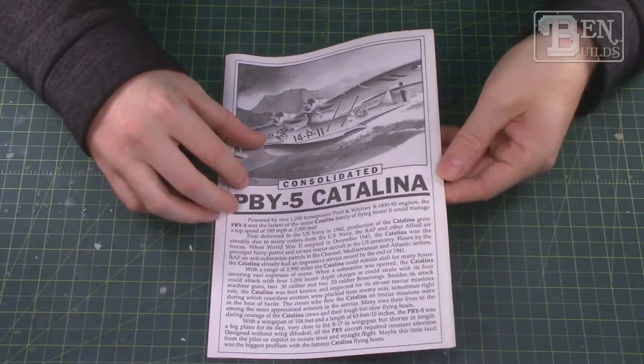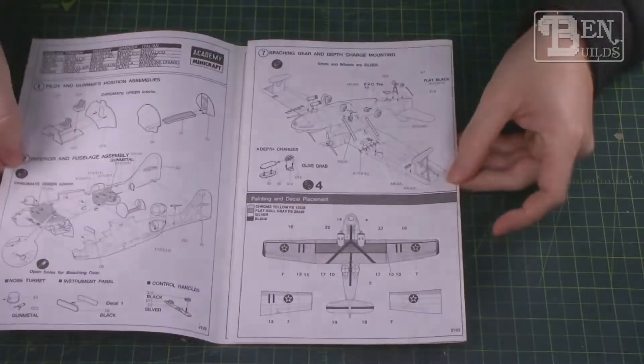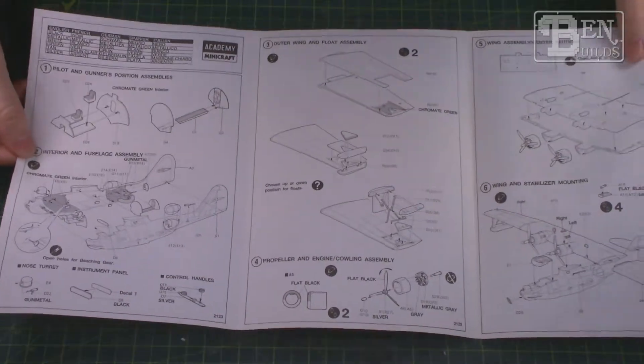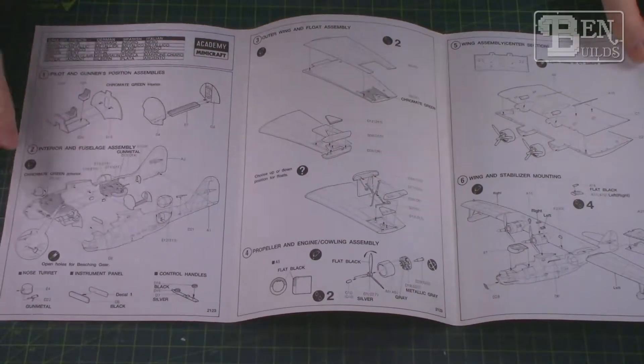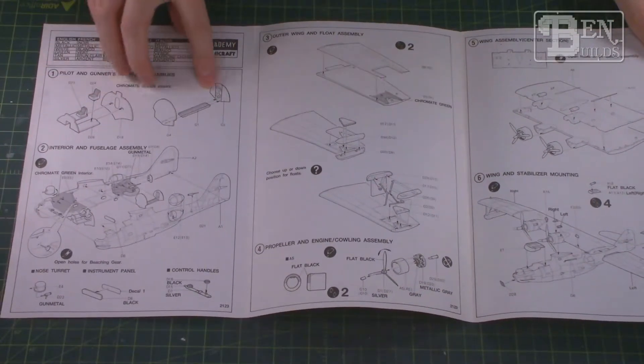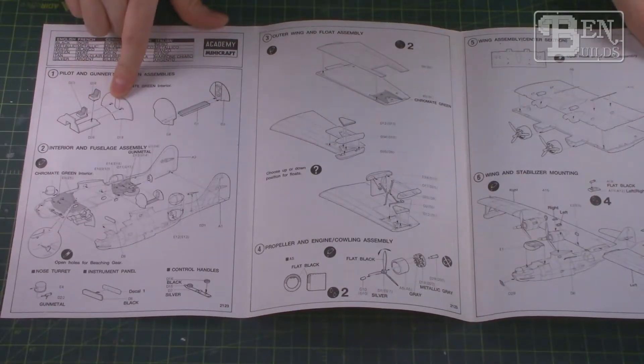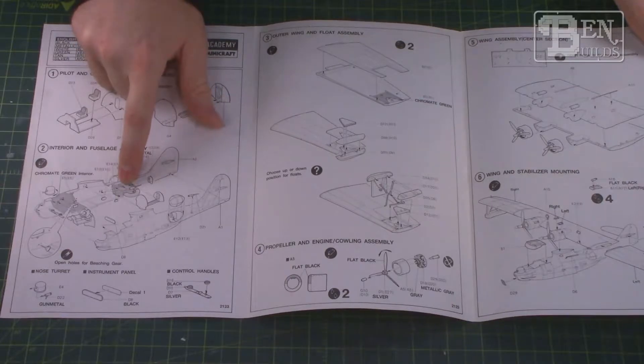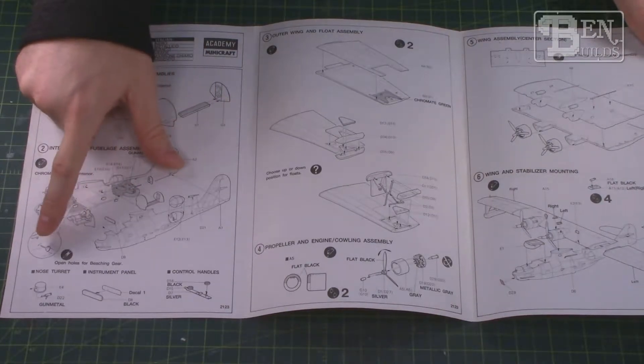Now for the instructions, we have just a basic fold-out instruction set here, and it goes through all of your basic sub-assemblies like the cockpit and then the internal areas there for the observation area. And of course we have just basic color call-outs, nothing too fancy. I don't know how much you're going to be able to see in terms of detail for the cockpit, so if we can see a lot of it in there, I might want to do a little bit of scratch building.